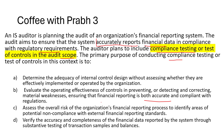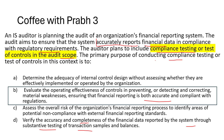Option A describes design effectiveness assessment, not compliance testing. Compliance testing goes beyond evaluating the design of controls to assess whether controls are operating effectively in practice. Option B: evaluating the operating effectiveness of controls in preventing, detecting, and correcting material weaknesses, ensuring financial reporting is accurate and compliant — makes sense. Option C relates to risk assessment, not compliance testing. Option D describes substantive testing, not compliance testing.